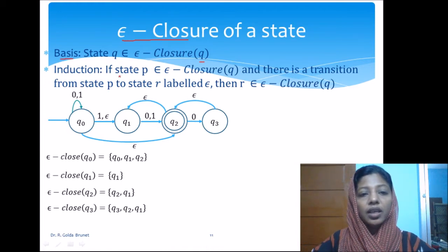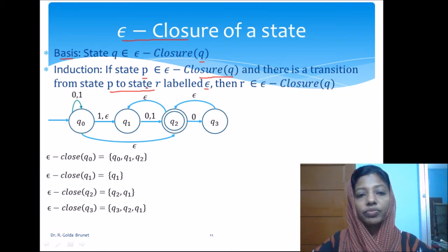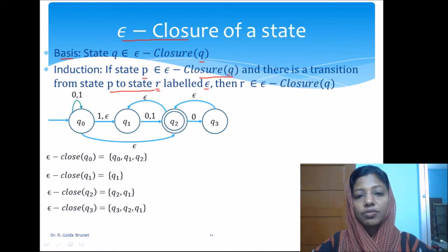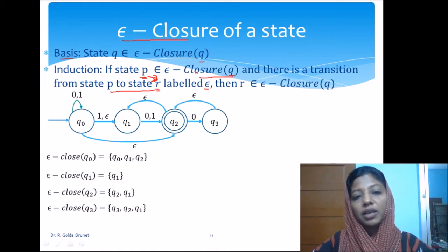The induction step is: if state p is in epsilon closure of state q, and there is a transition from state p to r with the label epsilon, then the epsilon closure of q will also include the state r. That is, from p to r we have a null string transition, and in that case the epsilon closure of q will also include the state r.